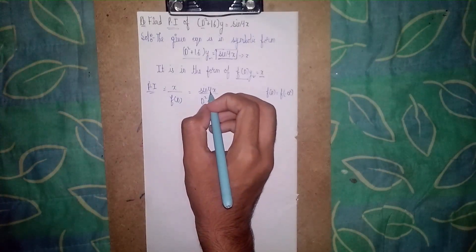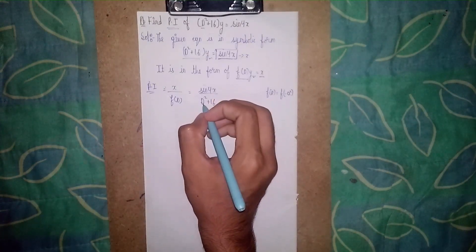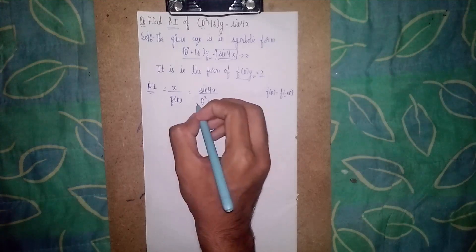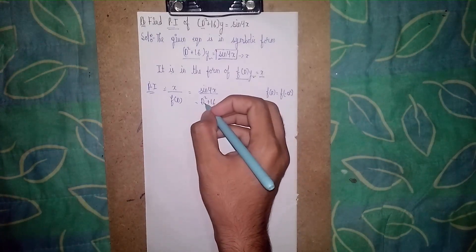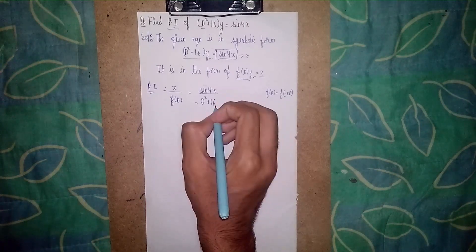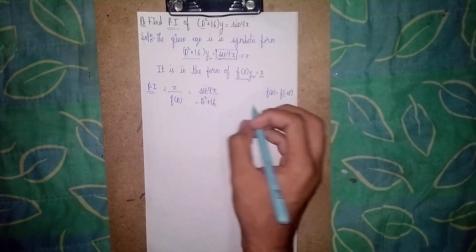If you substitute -a² where a=4, if you substitute -4², it will be -16. Then -16 + 16 will become zero. So this is why we need another formula to solve this question.